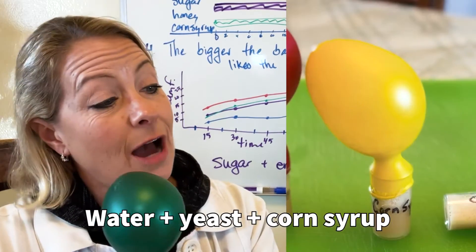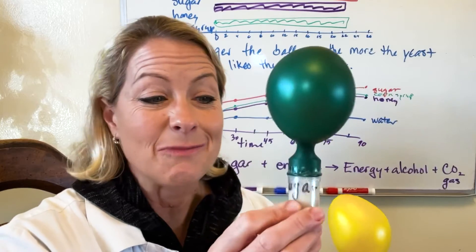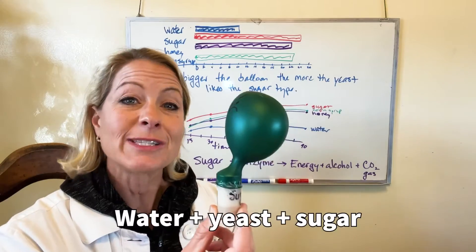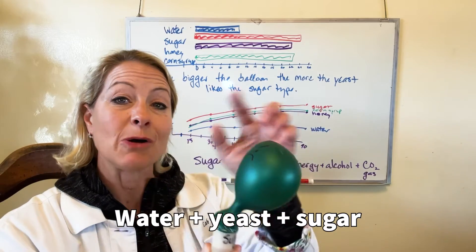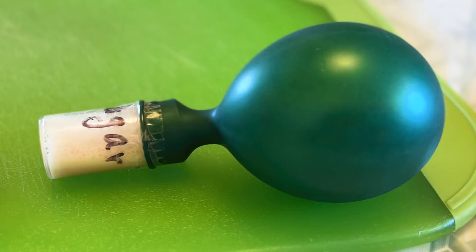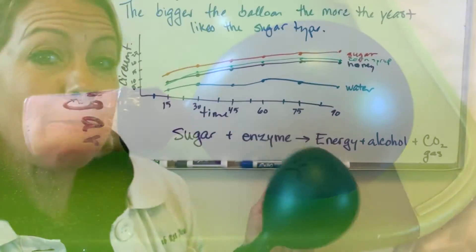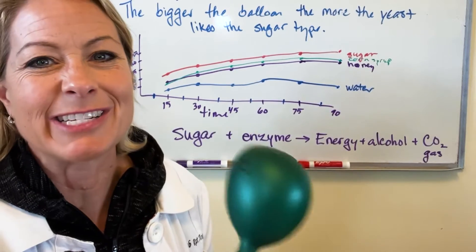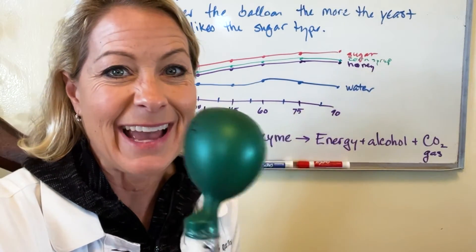This got big too, but the biggest one that the yeast liked the most was the sugar. Look how big that one got. The sugar was the sweetener that the yeast liked the most, and we can tell because of how big our balloon of carbon dioxide got. That meant they did more anaerobic cellular respiration to convert those sugars into energy.